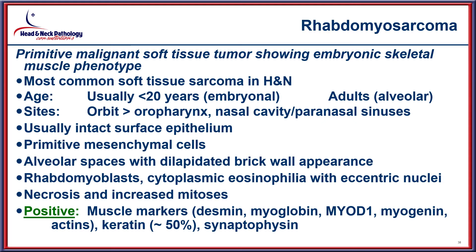Rhabdomyosarcoma also needs to be considered as a primitive soft tissue malignancy in this location, since the head and neck is one of the most common sites. The embryonal type is usually seen in younger patients, while the alveolar type is seen in adults. The alveolar type fits this differential, with primitive mesenchymal cells arranged in a dilapidated brick wall appearance as they collapse from alveolar spaces, comprised of rhabdomyoblasts, cytoplasmic eosinophilia, and eccentric nuclei. They are also reactive with muscle markers and positive for keratin and synaptophysin in a fair number of cases.